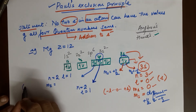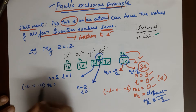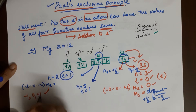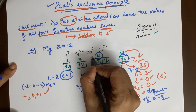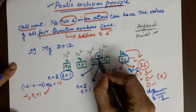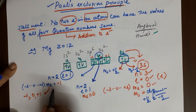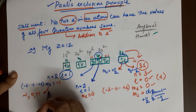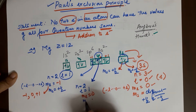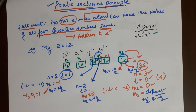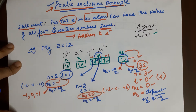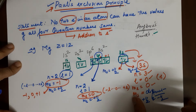Magnetic quantum number ml can have values from −l to +l. Since l = 1, the possible ml values are −1, 0, and +1. Let's say the first orbital has ml = −1, the second has ml = 0, and the third has ml = +1. So the first electron has ml = −1 and the second has ml = 0 — there is the difference. Both electrons have ms = +½ (clockwise), but they differ in ml, so not all four quantum numbers are the same. The rule is satisfied.